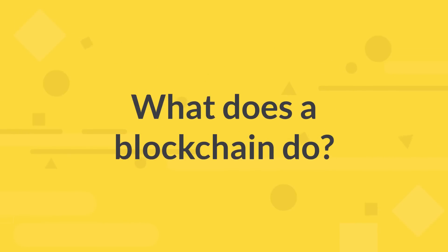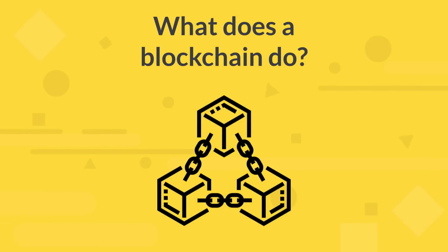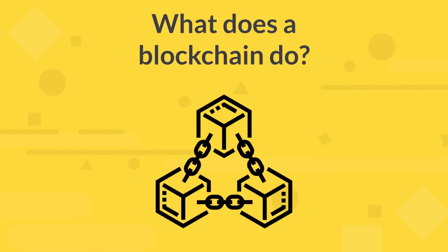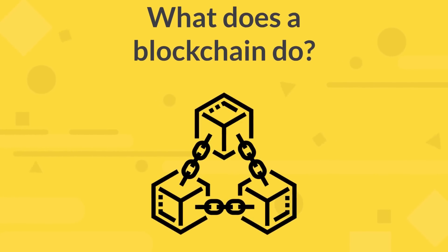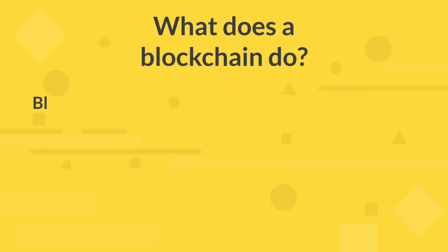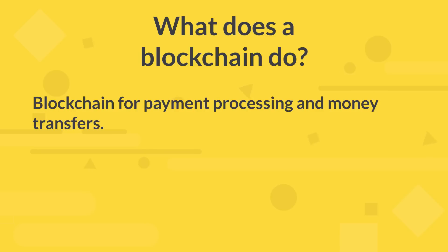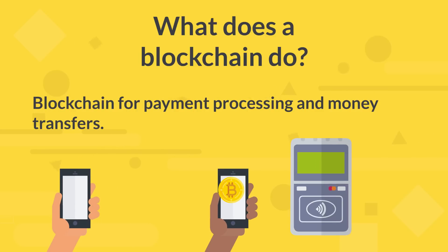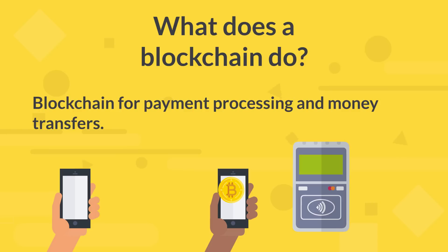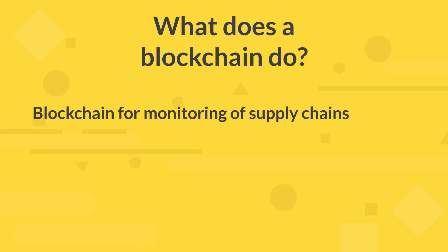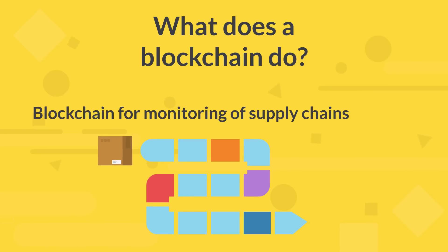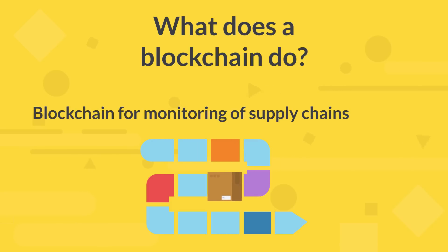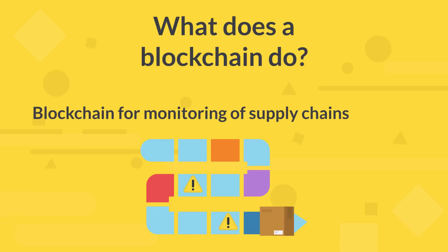While blockchain is still largely confined to use in recording and storing transactions for cryptocurrencies such as Bitcoin, proponents of blockchain technology are developing and testing other uses. Blockchain for payment processing and money transfers: transactions processed over a blockchain could be settled within a matter of seconds and reduce banking transfer fees. Blockchain for monitoring of supply chains: businesses could pinpoint inefficiencies within their supply chains quickly, as well as locate items in real time and see how products perform from a quality control perspective as they travel from manufacturers to retailers.